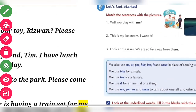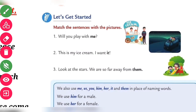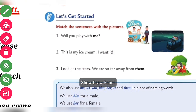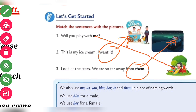The first page is about matching sentences with pictures. There are three sentences. First: 'Will you play with me?' — so 'me' is used here. Second: 'This is ice cream, I wanted it' — so 'it' is used for ice cream. Third: 'Look at the stars, we are so far from them' — 'them' is used for those two stars, and 'me' is used for her.